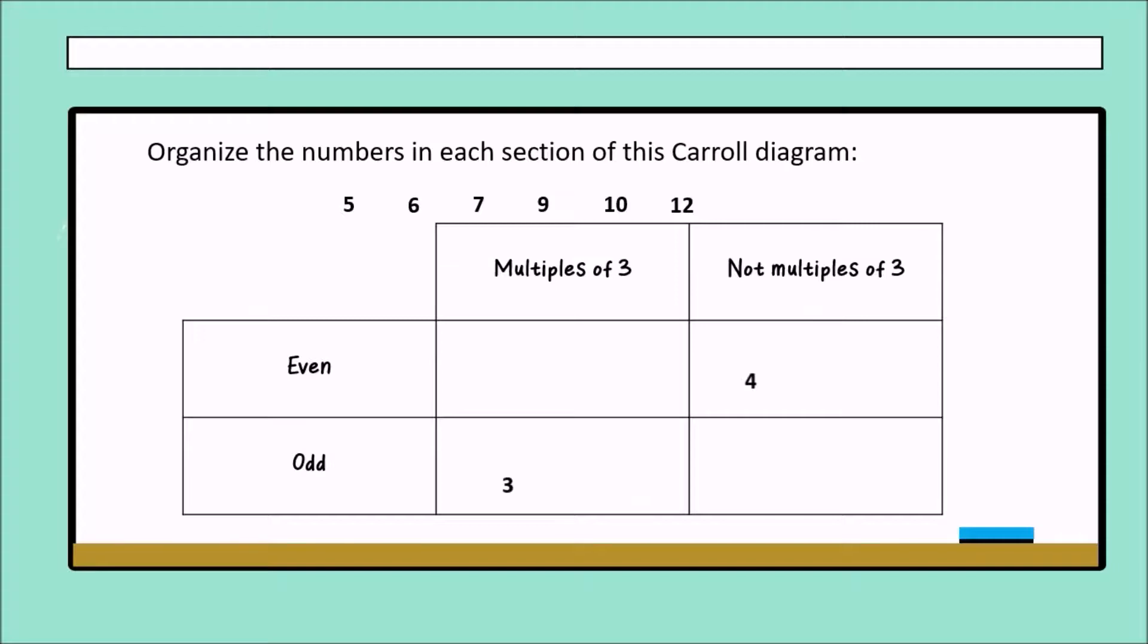Five. Where do you think that is five? Very good. Five is an odd number and is not a multiple of three.